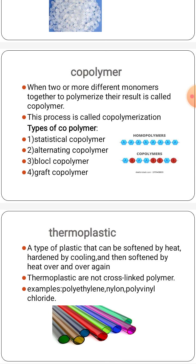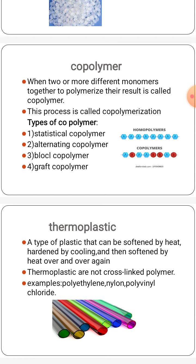Copolymers can be classified into four types. First one is statistical copolymer, in which two or more monomers are arranged in some statistical rule — the mole fraction of monomers should be equal to probability. The polymers are generally synthesized via the free radical polymerization method. An example is rubber made of a copolymer of styrene and butadiene.